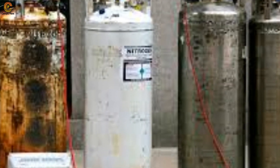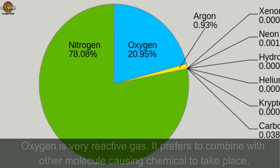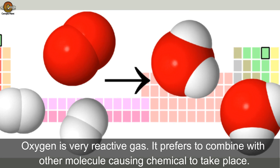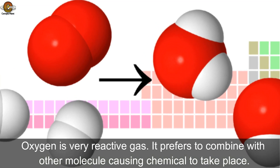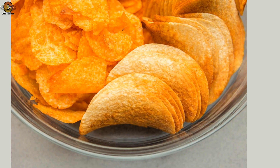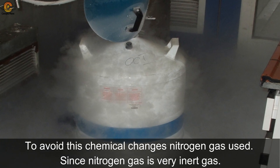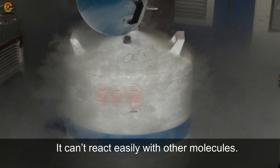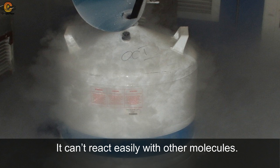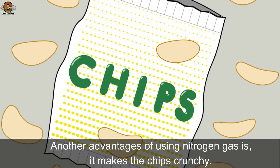The answer is nitrogen gas. We all know air contains 21% oxygen, and oxygen is a very reactive gas — it tends to combine with other molecules, causing chemical changes to take place. But in the case of chips, to avoid this chemical change, nitrogen gas is used. Since nitrogen gas is very inert, it cannot react easily with other molecules. Another advantage of using nitrogen gas is that it makes the chips crunchy.